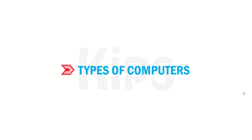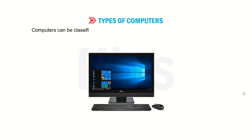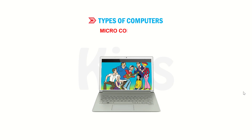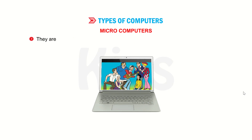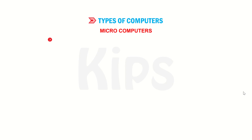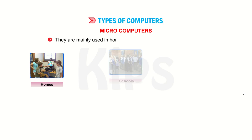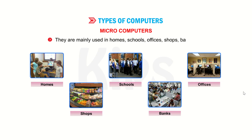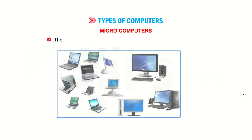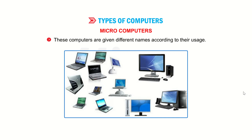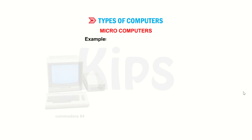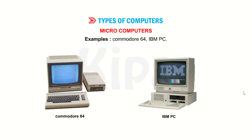Now let us talk about types of computers. Computers can be classified into the following types with respect to their size, speed, storage capacity and cost. Microcomputers: These computers are small in size and cheap. They are usually designed for personal use, therefore they are also called personal computers. They are mainly used in homes, schools, offices, shops, banks, etc. Examples include Commodore 64 and IBM PC.